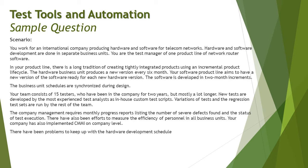The hardware business unit produces a new version every six months. Your software product line aims to have a new version ready for each new hardware version, meaning you comply with whatever hardware is being developed. The software is developed in two-month increments — your sprint or development cycle is two months and you release at six months, so there are three cycles. The business unit schedules are synchronized during the design phase to avoid any issues or misunderstandings.